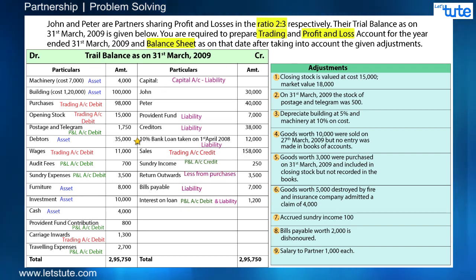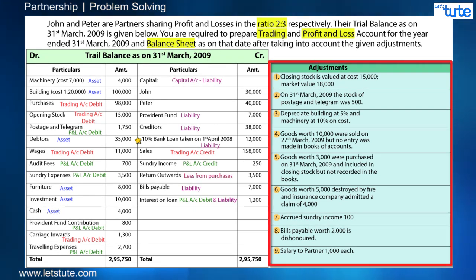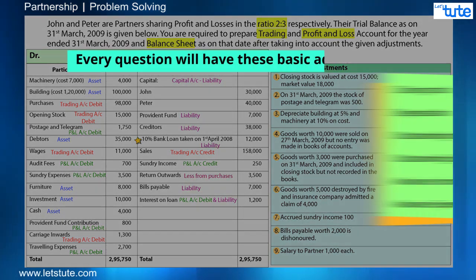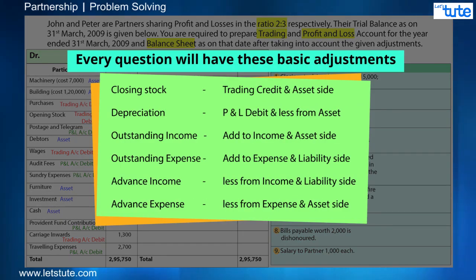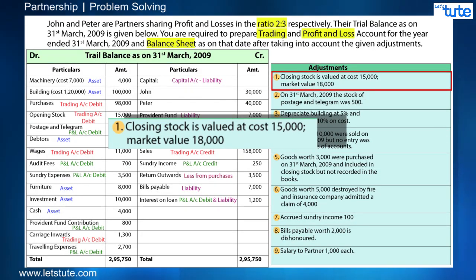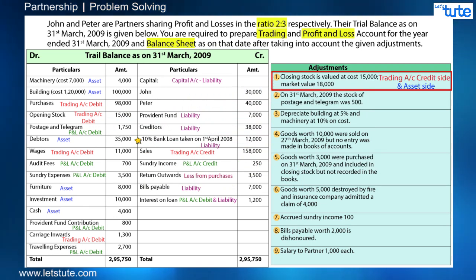Now we are done with the trial balance item markings. Each adjustment will have equal debit and credit impact in the final accounts. Every question will have basic adjustments, so we try to spend less time on those and focus on major ones. Starting with the first adjustment: closing stock is valued at cost 15,000 and market value 18,000. We record 15,000 as per the conservatism principle. The effect will be trading account credit and balance sheet asset side.